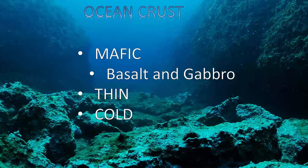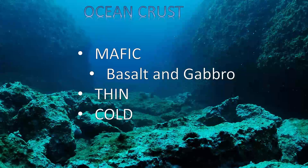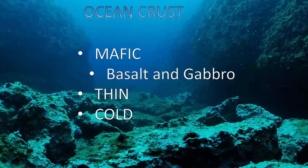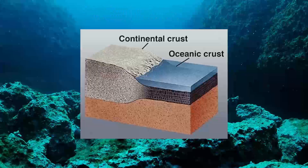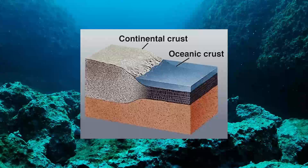All of that mafic material stays pretty thin. As we will see a little bit later, ocean crust doesn't really crumple up together too much at their tectonic boundaries. When ocean crust is formed, it is igneous and runny, so it spreads out. It's also cold and pretty dense. Mafic rocks lose their heat relatively quickly compared to more felsic rocks. So, ocean crust is thin, dense, cold, and mafic.